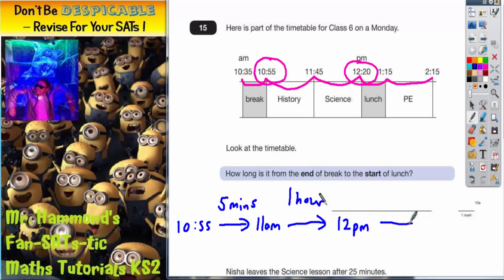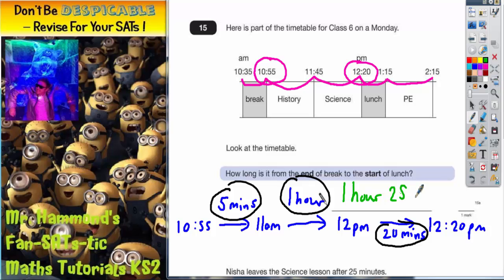And then from 12 PM to 12:20 PM, that is going to be 20 minutes. So all we've got to do now is count up these gaps: 5 minutes, 1 hour, and 20 minutes. Put it all together and you should get your final answer, which is 1 hour 25 minutes.